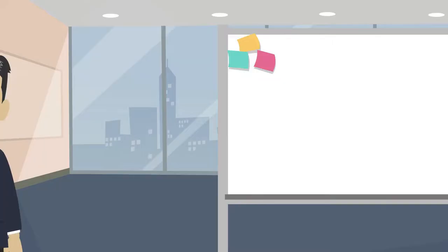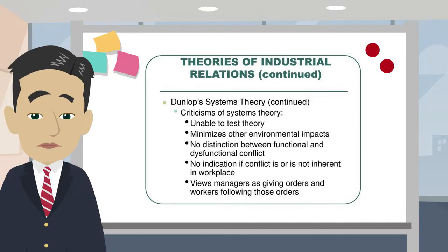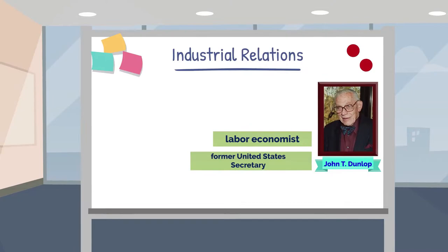Welcome to another lesson in our Industrial Relations series. Today, we are going to look at one of the early theorists on the subject of industrial relations, Mr. John Thomas Dunlop, a labor economist and former United States Secretary of Labor.